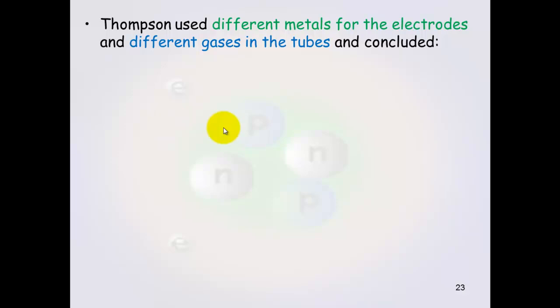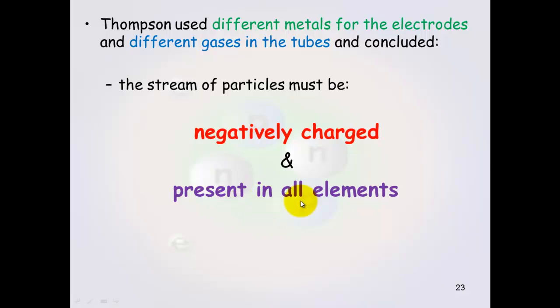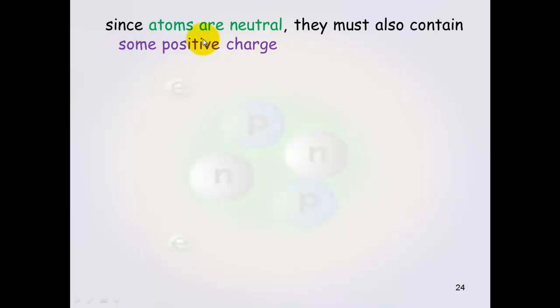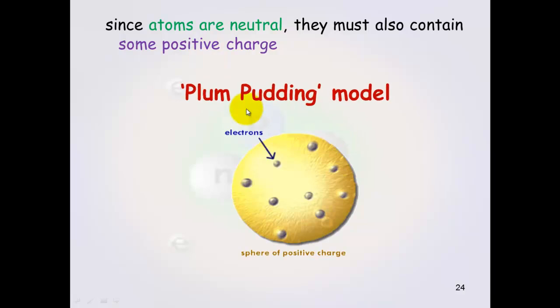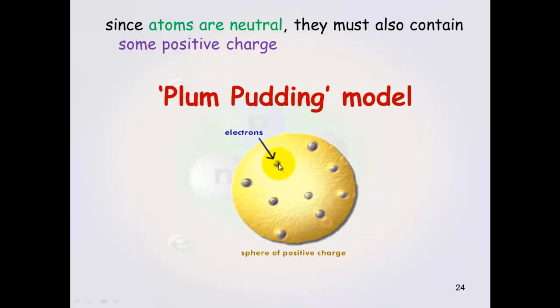Thomson used different metals for the electrodes and different gases in the tubes. And what he concluded was that the stream of particles must be negatively charged and present in all elements. And it had to be present in all elements because he did it for lots of different metals and gases. Because atoms are neutral, they have no overall positive negative charge themselves. He said that there must also be some sort of positive charge present. And thus you have this plum pudding model of these negative electrons embedded in a positive sphere of charge.